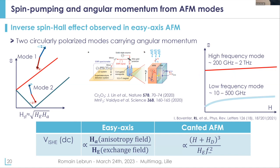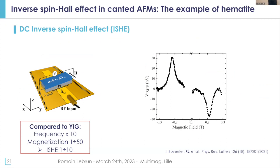This inverse spin Hall effect in an easy-axis antiferromagnet is proportional to the anisotropy field over the exchange field, and since the exchange field is extremely large, this effect is quite small. What we tried to do more recently was related to the fact that in canted antiferromagnets where you have the Dzyaloshinskii-Moriya interaction, the inverse spin Hall effect will be proportional to the DMI field over the exchange field. We worked with hematite above the Morin transition, where the anisotropy is small and the frequency can come down to 10 GHz, and we could observe signals of tens of nanovolts.